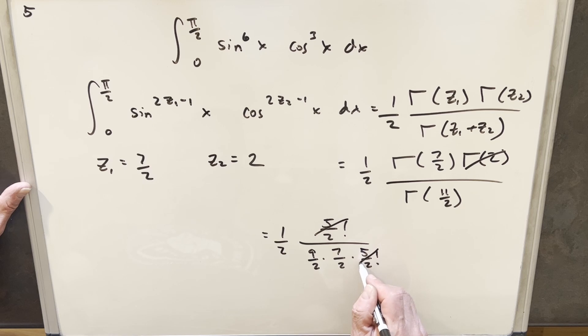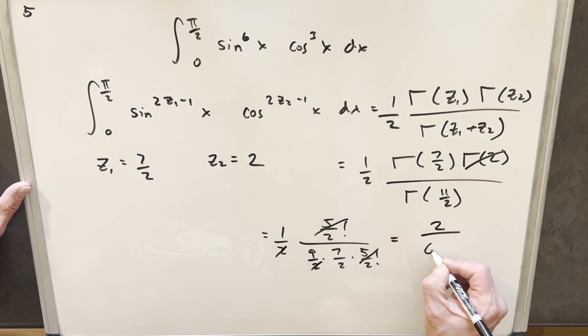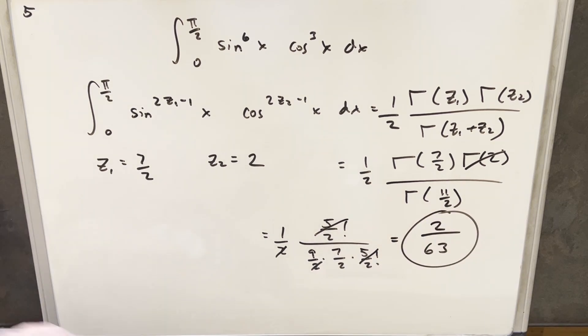Cancel here. Cancel here. I'll cancel a 2 with a 2. And then we'll bring a 2 into the numerator. We're just going to have 2/63. That's it. Just a quick problem. So we'll stop it there. Thanks.